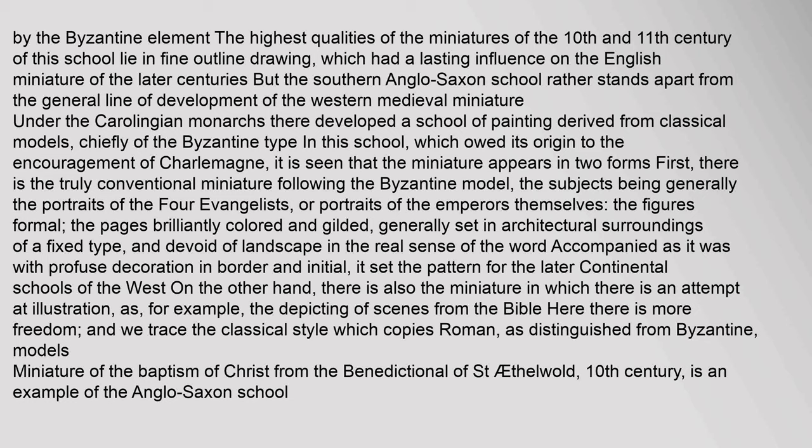Under the Carolingian monarchs there developed a school of painting derived from classical models, chiefly of the Byzantine type. In this school, which owed its origin to the encouragement of Charlemagne, the miniature appears in two forms: first, there is the truly conventional miniature following the Byzantine model, the subjects being generally the portraits of the four evangelists or portraits of the emperors themselves, the figures formal, the pages brilliantly colored and gilded, generally set in architectural surroundings. On the other hand, there is also the miniature in which there is an attempt at illustration, as in the depicting of scenes from the Bible. Here there is more freedom, and we trace the classical style which copies Roman, as distinguished from Byzantine, models. The miniature of the baptism of Christ from the Benedictional of Saint Æthelwold, 10th century, is an example of the Anglo-Saxon school.